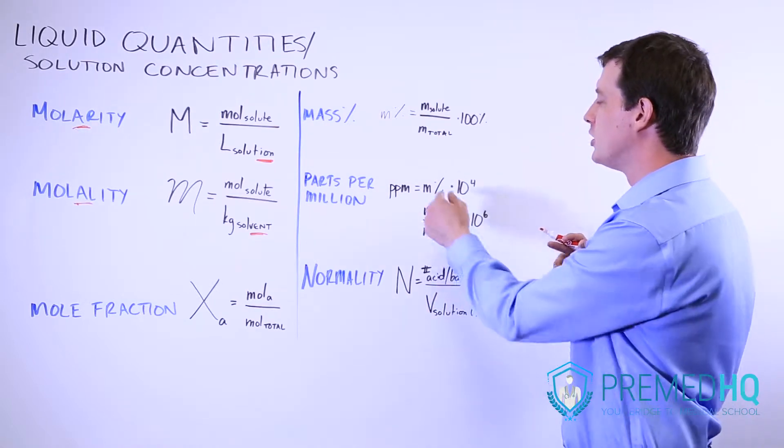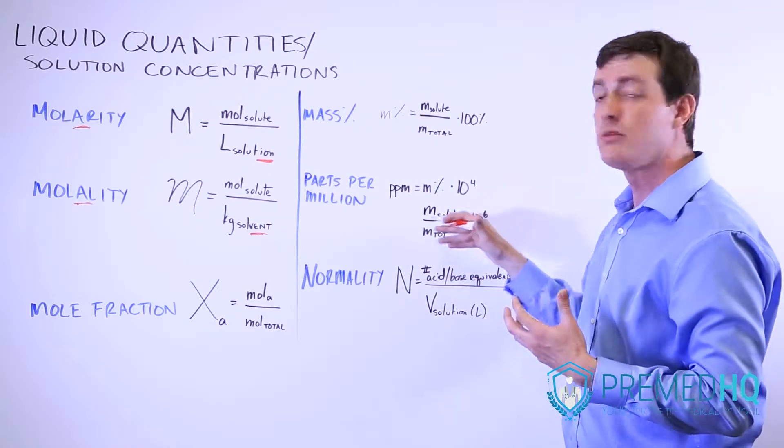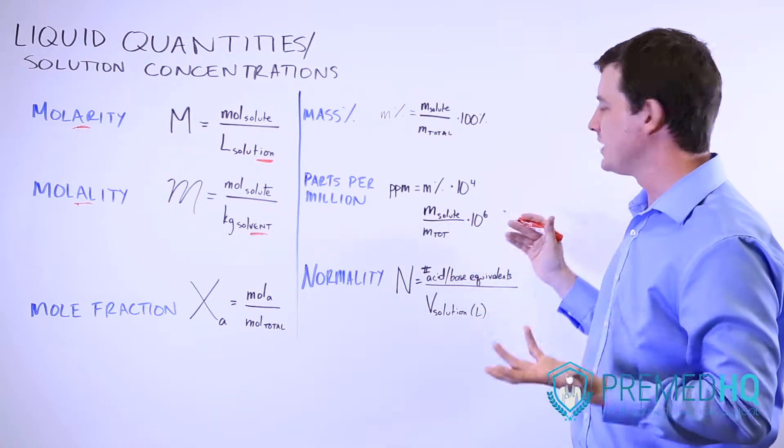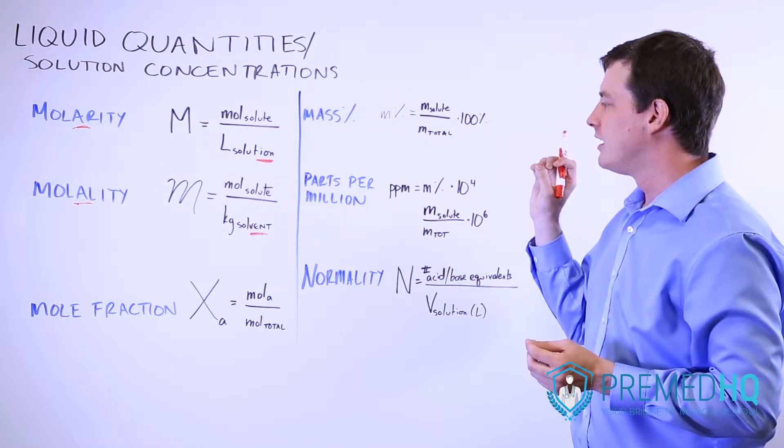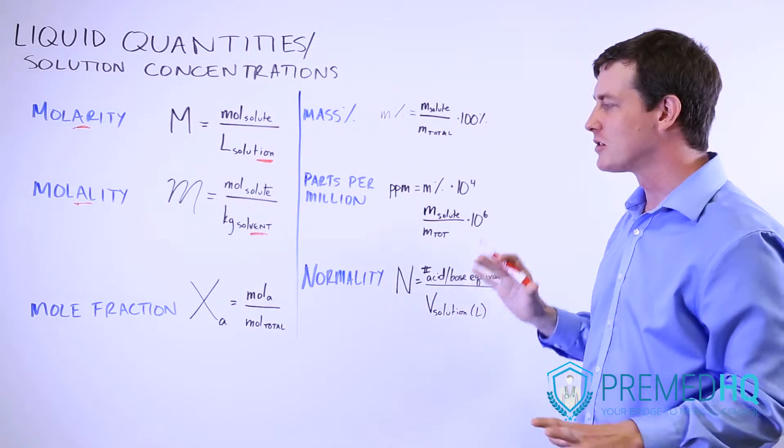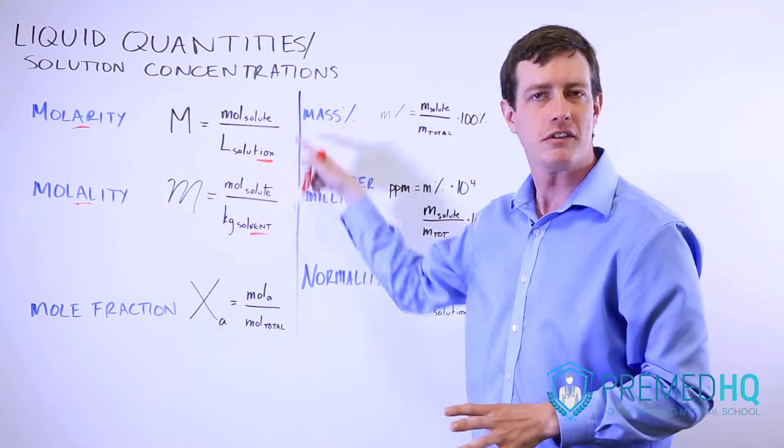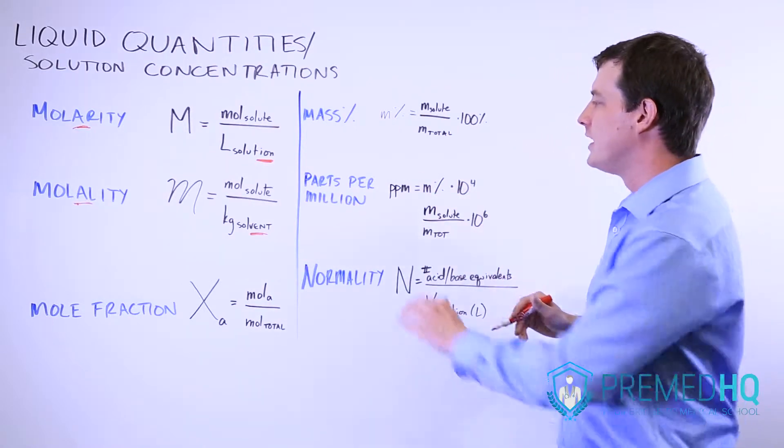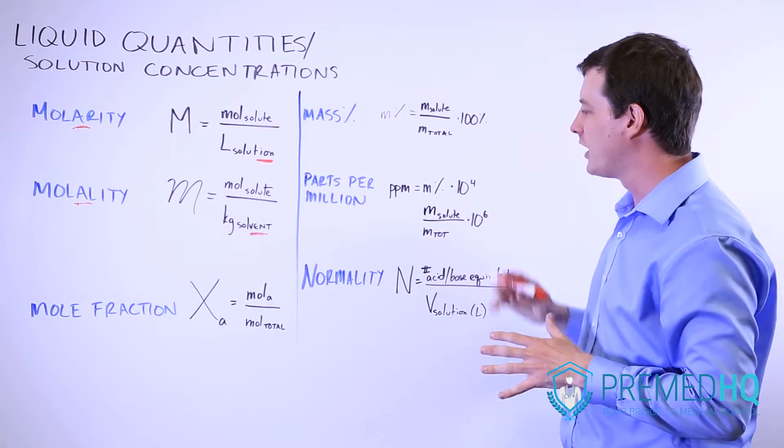The other way is you can simply look at the mass of your solute divided by the total mass and just multiply it by 10 to the sixth. But remember that parts per million is a mass measurement and not a measurement of particles. Particles is a mole fraction or perhaps one of these. Parts per million is a mass measurement and that's very important to create that distinction.